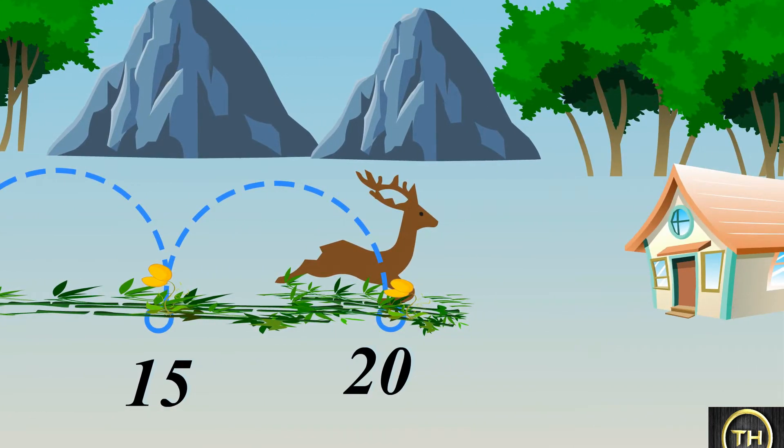This means that the deer jumped on numbers with the interval of 5.